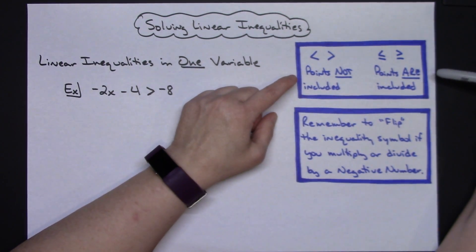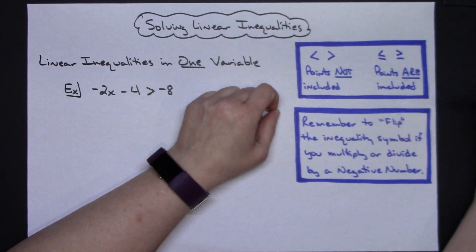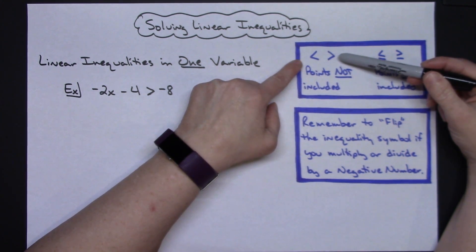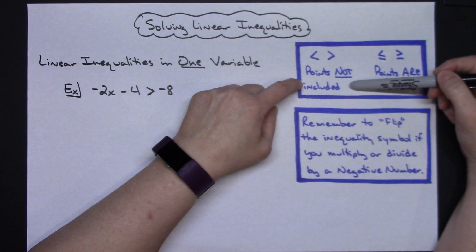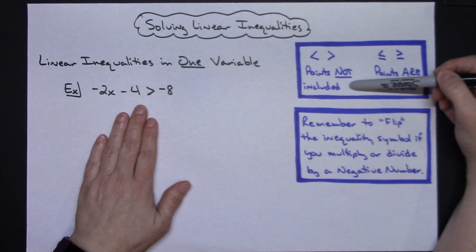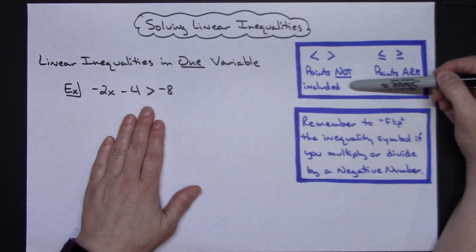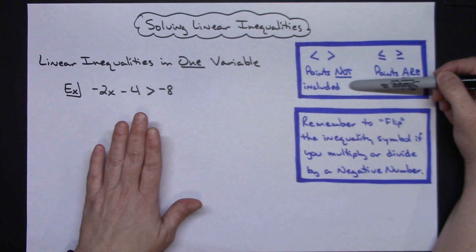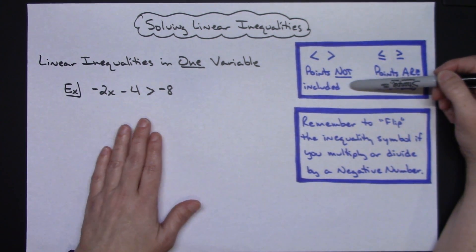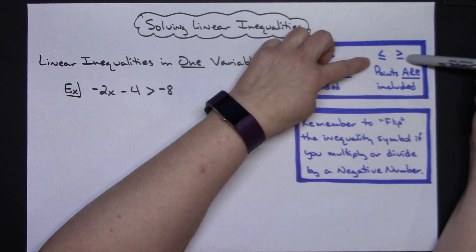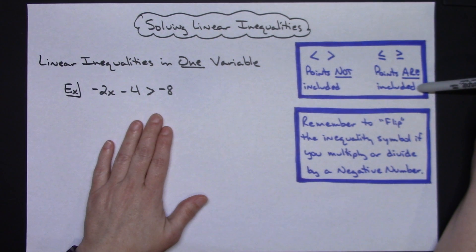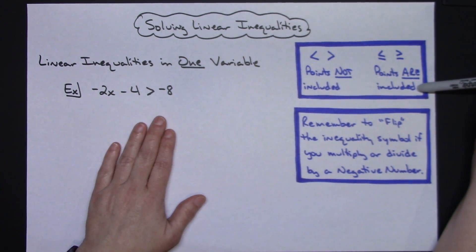Before we get started, there are some points you need to memorize for inequalities, especially going into a test like the SAT or a chapter test. If you're dealing with a less than or greater than symbol, the points are not included in your solution — on a number line use open dots, and in interval notation use a curvy bracket. If it's less than or equal to or greater than or equal to, the points are included, meaning a closed dot or a square bracket.